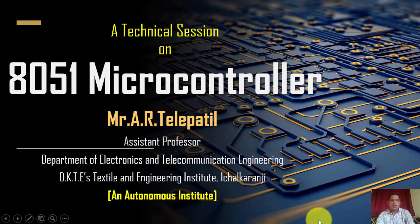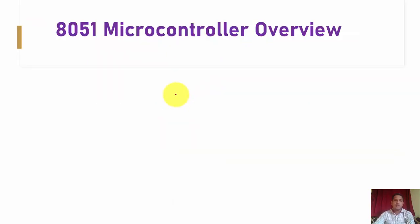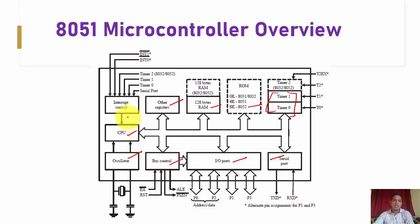Hello everybody, welcome to this video lecture series on the 8051 microcontroller. In today's video session we are going to discuss interrupt programming in the 8051 microcontroller. As we know, the 8051 microcontroller has different internal features like registers, RAM, ROM, a timer section, serial communication, input/output ports, oscillator circuitry, bus control section, a central processing unit, and most importantly, an interrupt control unit. This interrupt control unit controls the interrupt activity associated with the 8051 microcontroller, dealing with external hardware, timers, and serial communication.